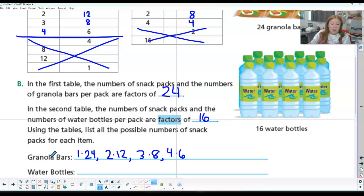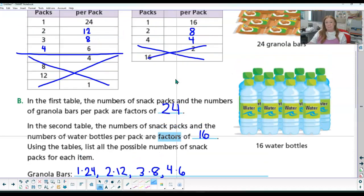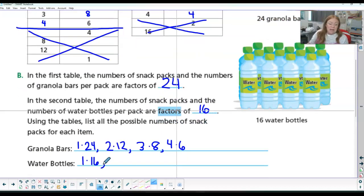Or we can do all of these backwards. We can also have 6 packs of 4, 8 packs of 3, 12 packs of 2, 24 packs of 1. And then our water bottles. We have 1 and 16. So you could either have 1 group of 16 or 16 groups of 1. We can have 2 and 8, 2 packs of 8 or 8 packs of 2, and 4 packs of 4.